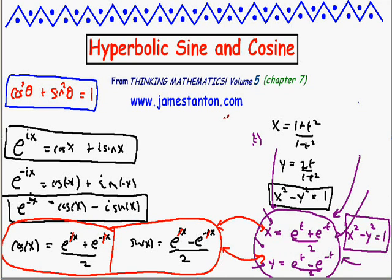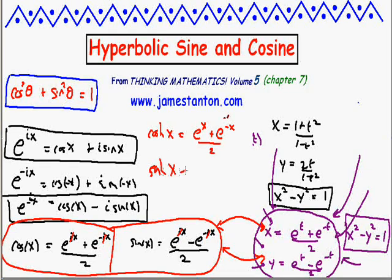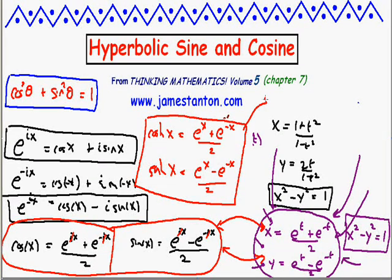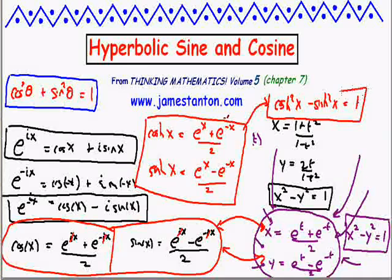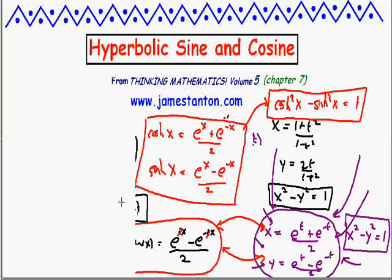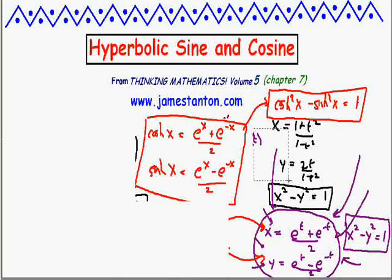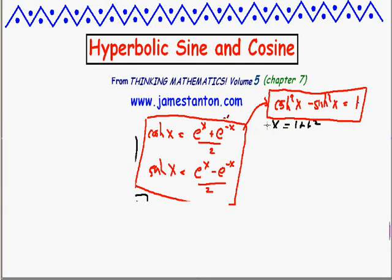People feel these formulas are the natural counterpart to the circular functions. So we define cosh of x to be (e to the x plus e to the minus x) divided by 2, and sinh of x to be (e to the x minus e to the minus x) divided by 2. And these formulas do indeed satisfy cosh-squared x minus sinh-squared x equals 1 — the equation of the hyperbola.